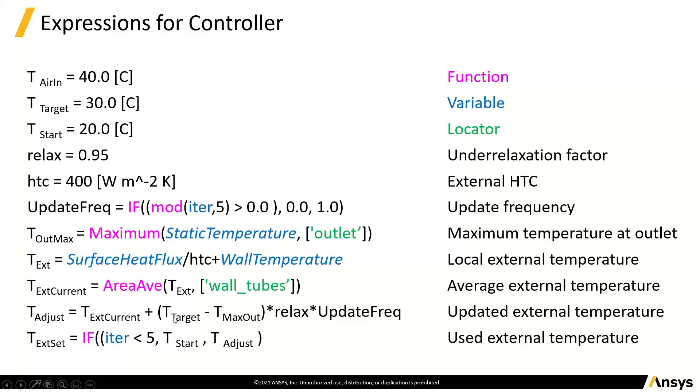We can get an area average over the tube of the temperature. We can set up that equation for adjusting. And we can set an if statement here so that if it's before the first five iterations, then this external temperature is set to be a constant. And after that, it becomes this adjusted one.